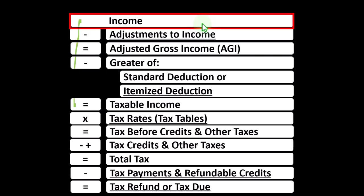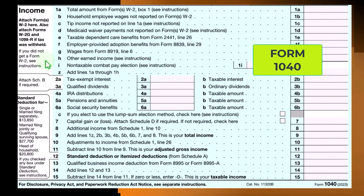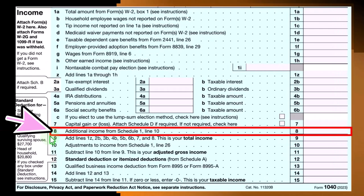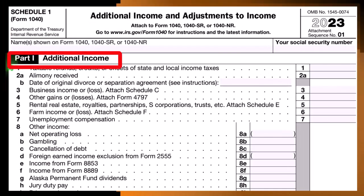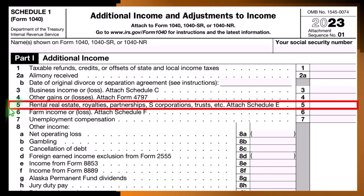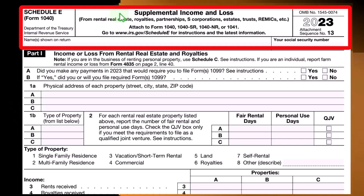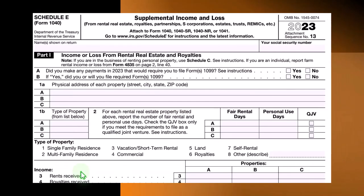This income tax formula basically outlines the calculation of Form 1040. On the income section, Schedule E ultimately rolls into line number eight, additional income from Schedule 1. Schedule 1 covers additional income and adjustments to income — part one, additional income — with Schedule E rolling into line five, rental real estate. Schedule E is the Supplemental Income and Loss form, essentially an income statement breaking out income by property.